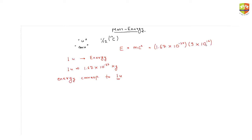Dividing by the charge of an electron, which is 1.6 × 10⁻¹⁹, gives us the energy in electron volts. Remember this value — it is very useful: the energy corresponding to 1 unit of mass is equal to 931.5 MeV (mega electron volts).